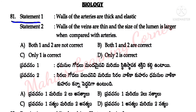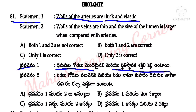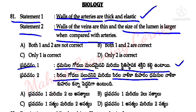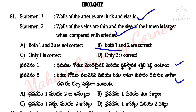Statement 1: Walls of the arteries are thick and elastic. Statement 2: Walls of the veins are thin and the size of the lumen is larger when compared with arteries. So the correct answer is option B — both 1 and 2 are correct.